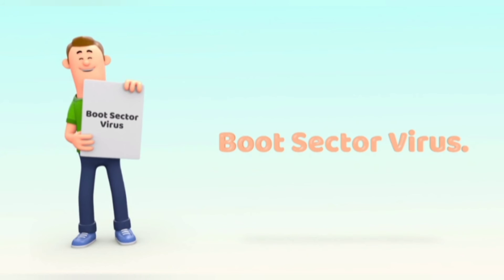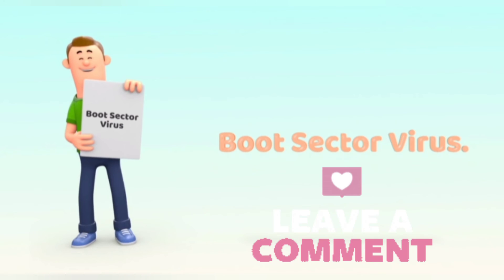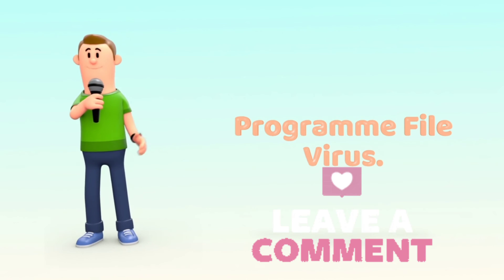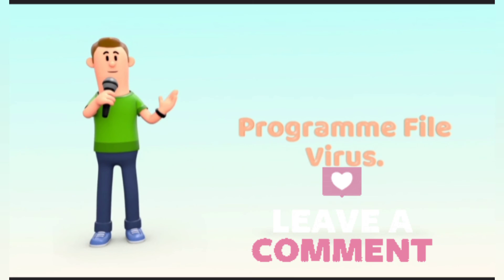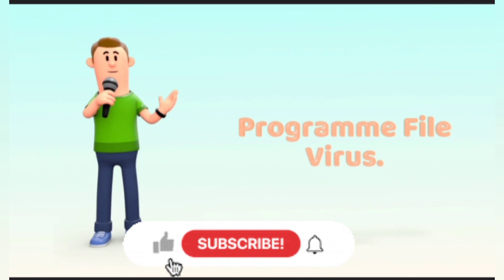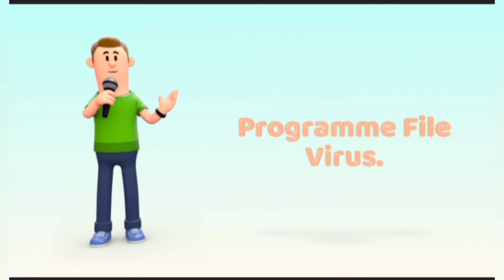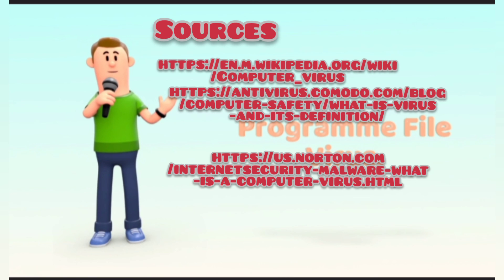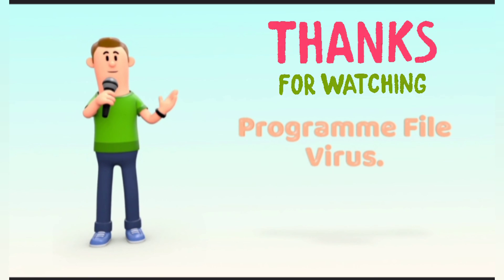Did you know the first computer virus had the name 'Creeper'? Now let's learn about program file viruses. This type of virus infects or attaches itself to executable files — files with extensions such as .exe, or compressed files like .zip or .rar. Every time these files are run or opened, the computer virus loads itself into memory and starts infecting other files or programs. So this was all about computer viruses and their types. In the next video, we shall discuss how to keep our computers safe from computer viruses by using antivirus software.